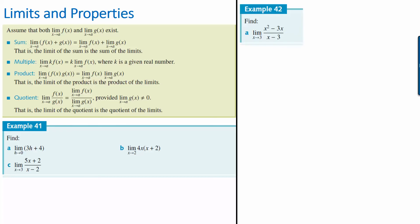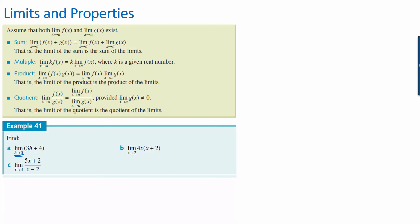If we do this one — if h approaches zero for 3h plus 4 — we're just saying what if h becomes a very, very small number? If you do three times something very, very small, the result becomes very, very small — almost negligible. So you're taking that tiny number and adding four. Technically you should be closest to four: 4.000-something. You're getting four and adding on such a small number that it's negligible. So it's just approaching four. It's not exactly four, but we're saying it's approaching four. That's what the limit is saying.